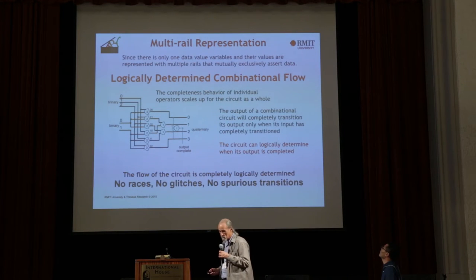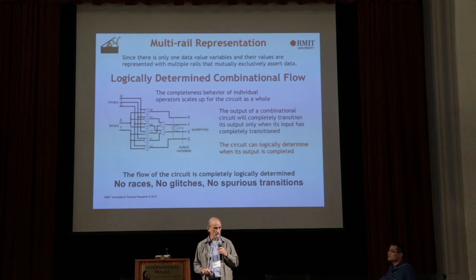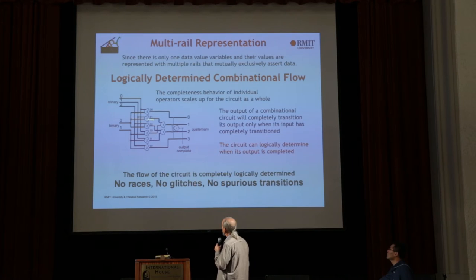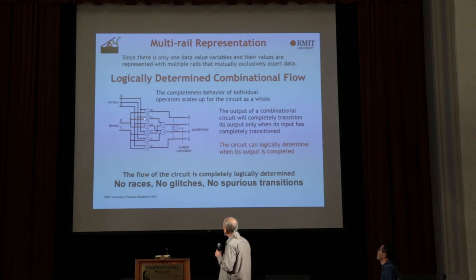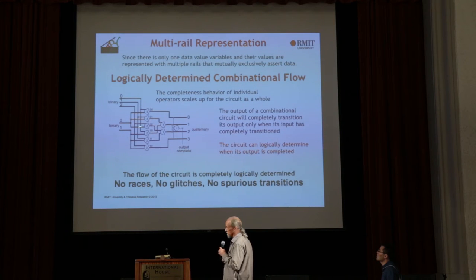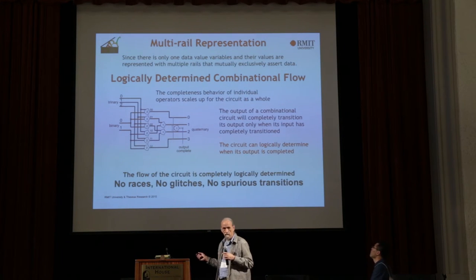We can make combinational circuits with these gates and the behavior scales up for the circuit as a whole. We only have one data value, so we use multi-rail representation — a two-value variable, three-value variable, four-value variable — and only one rail transitions to data at a time. Because of the completeness behavior of the threshold functions, the combinational circuit as a whole exhibits completeness behavior also: the output transitions only when the input is completely transitioned. The combinational circuit can detect its own completeness of behavior — it knows when it's done processing its input.